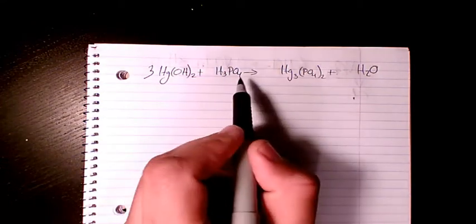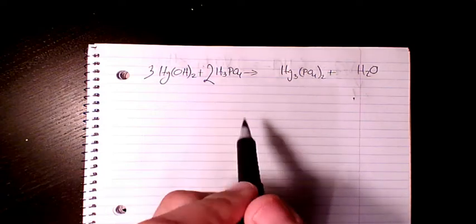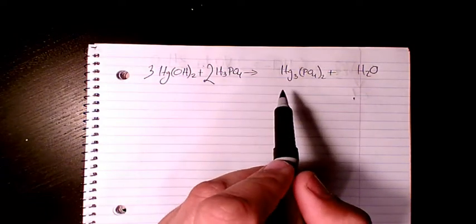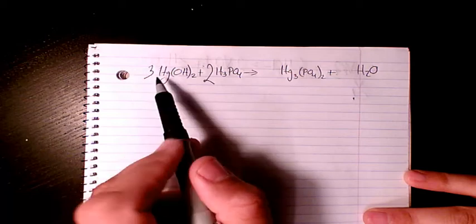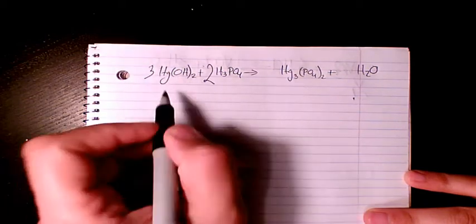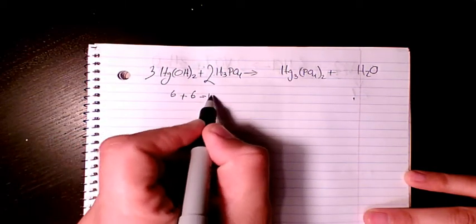Then let's check the hydrogen. Hydrogen, we have three times two, six, and we have two times three, six, twelve. And here we have two, so we need to have six of them here.